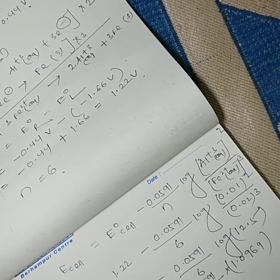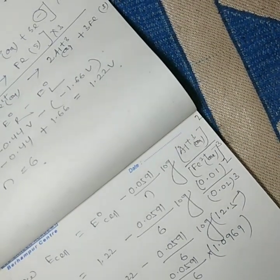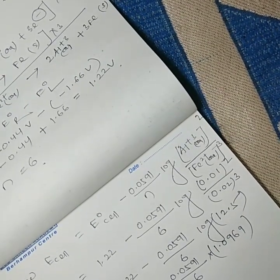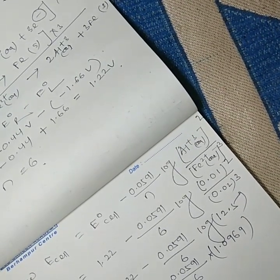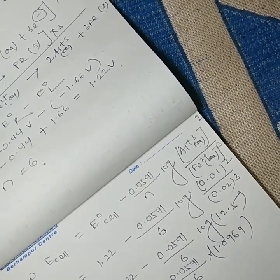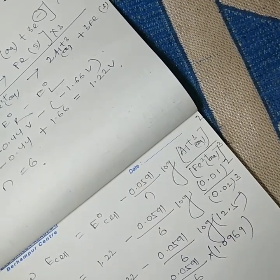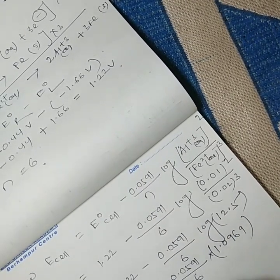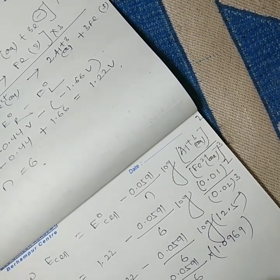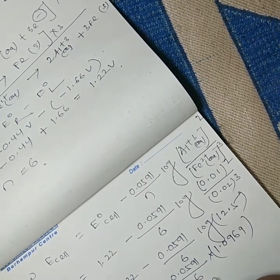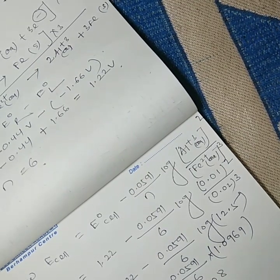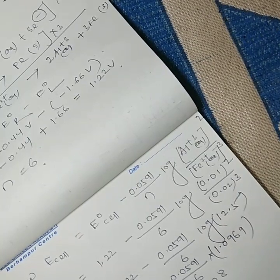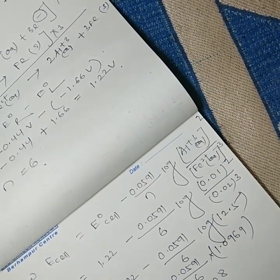E_cell = 1.22 − (0.0591/6) × log(12.5). log(12.5) = 1.0969. So E_cell = 1.22 − 0.0108. The final answer is E_cell = 1.20 V.